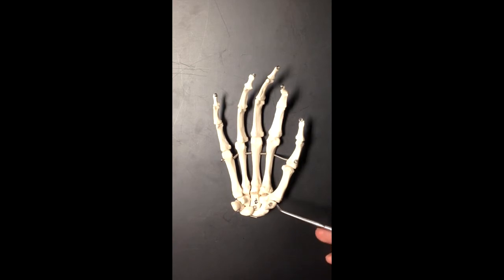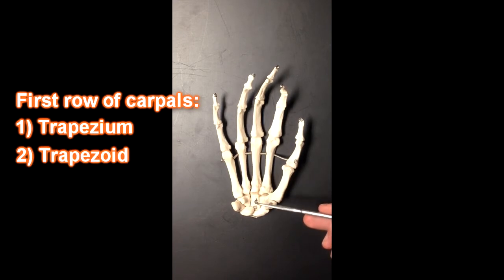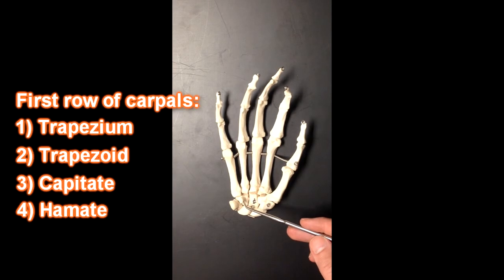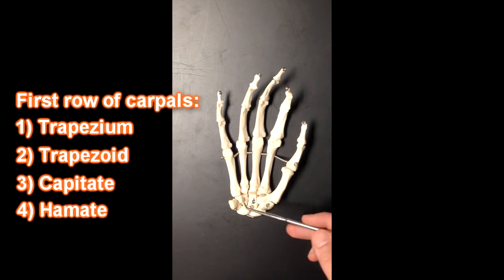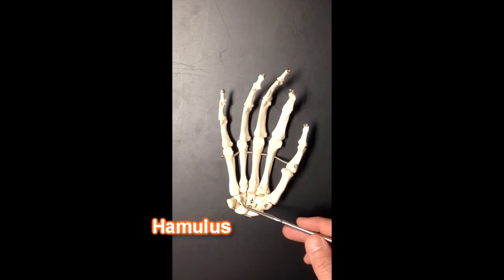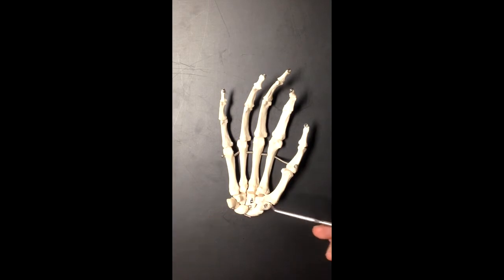Now starting with the thumb, we can start with this bone right here, which is the trapezium. The next bone over would be the trapezoid, then the capitate, and then the hamate. And the hamate has this little hook on it, and that hook you can use to help you identify whether you've landed on the right bone. So hamate, this is called the hamulus of the hamate, or hook of the hamate. Hook and hamulus mean the same thing.